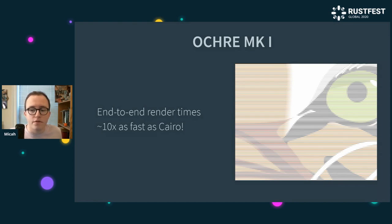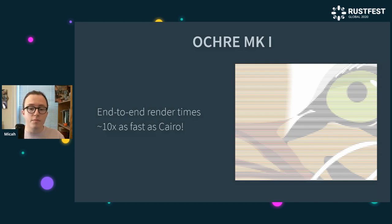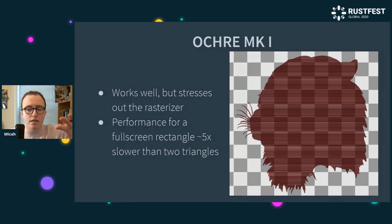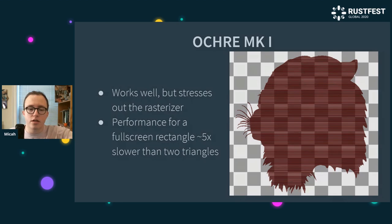This had much better performance than I expected from how kind of weird and also how simple the design is. For complex scenes — like the tiger scene this is a clipping of — I was getting times that were 10 times as fast as Cairo, which is a single-threaded CPU renderer. That was really promising, but it has some downsides: it doesn't handle humongous solid spaces very well. If you're rendering a full-screen rectangle, the GPU gets stressed out by how many lines you're trying to shovel through it, and it is about five times slower than just doing it with two rectangles.